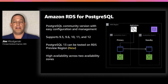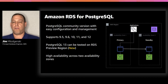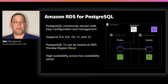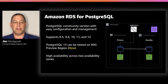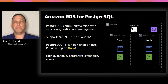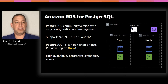With Postgres on RDS, you're getting the code from the Postgres community at postgres.org. You have all the major versions from 9.5 up to 12. Keep in mind that 9.5 is reaching end of life soon — the community's last release will be in February and it'll be deprecated on RDS around that time. New versions are available too: Postgres 13 is available in preview today and will be GA soon.